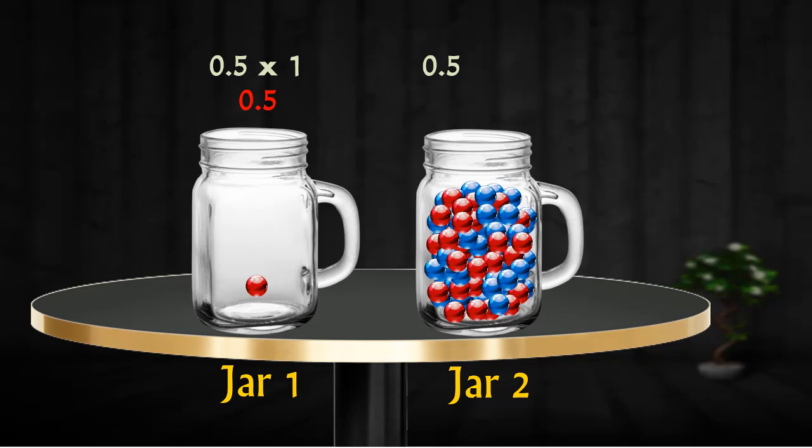So, jar 2 would have a probability of drawing a red marble equal to number of red marbles divided by total number of marbles in this jar, which gives us a probability of 0.4949. Adding up these two components gives us a total probability of 0.7474.